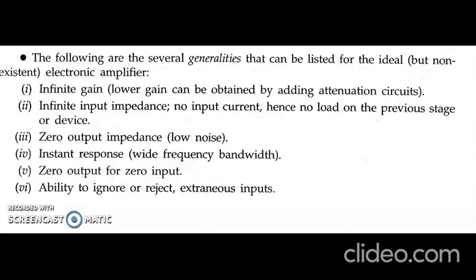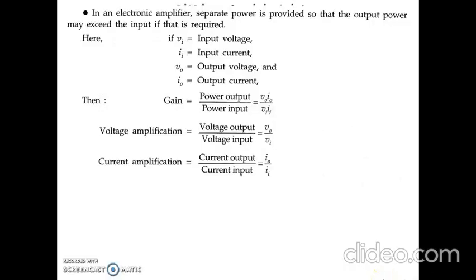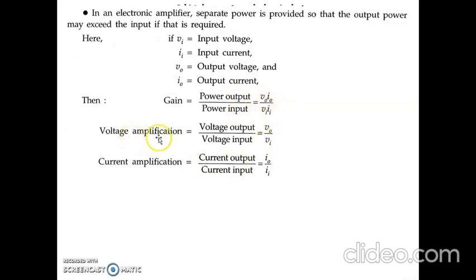Let us see the expressions for different types of gains. If Vᵢ is the input voltage, Iᵢ is the input current, V₀ is the output voltage, and I₀ is the output current, then gain equals output power divided by input power, that is V₀·I₀ divided by Vᵢ·Iᵢ. Current amplification is given by I₀ divided by Iᵢ.